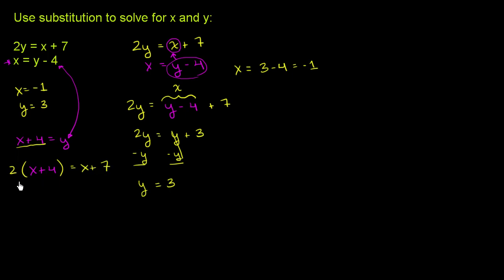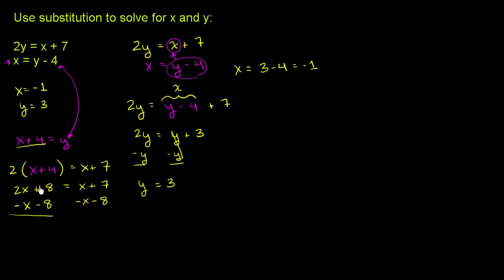We can distribute this 2, so it gets 2x plus 8 is equal to x plus 7. We subtract x from both sides, and then subtract 8 from both sides. The left-hand side cancels out and we're just left with x. On the right-hand side that cancels out and we are left with negative 1. Then we substitute back: y is equal to x plus 4, so y is equal to negative 1 plus 4, which is equal to 3.